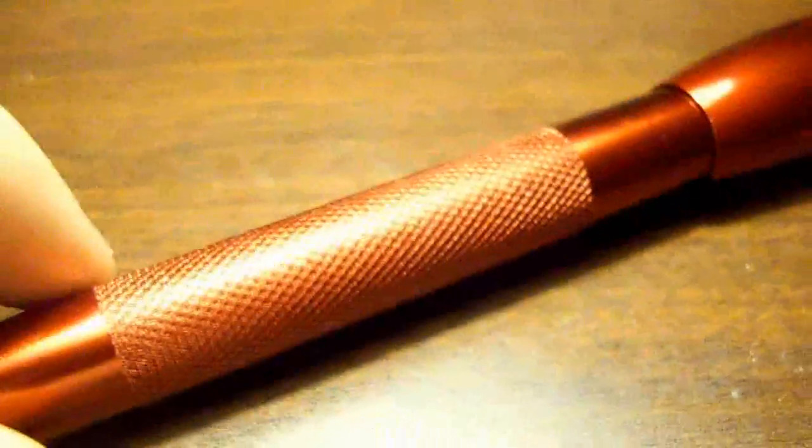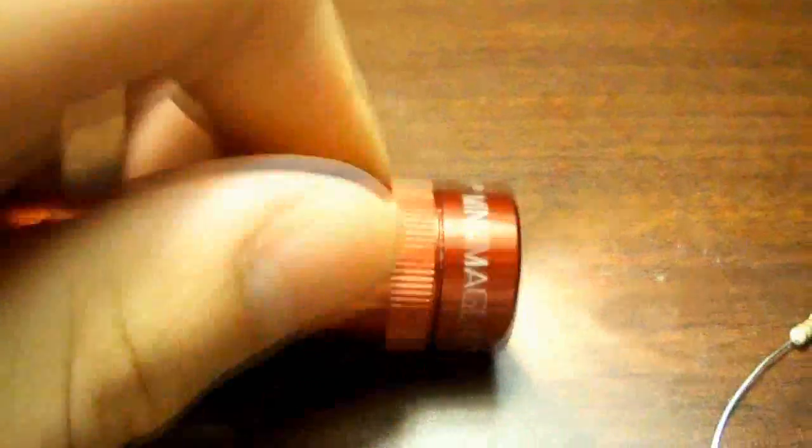Alright, so the first thing you're going to need to do is take your mag light and disassemble it. You got to twist it counterclockwise until the top pops off and the light will be on. You just pop the light out. Now take out the batteries.